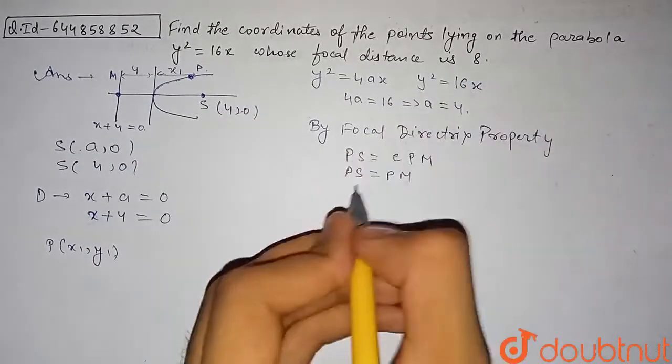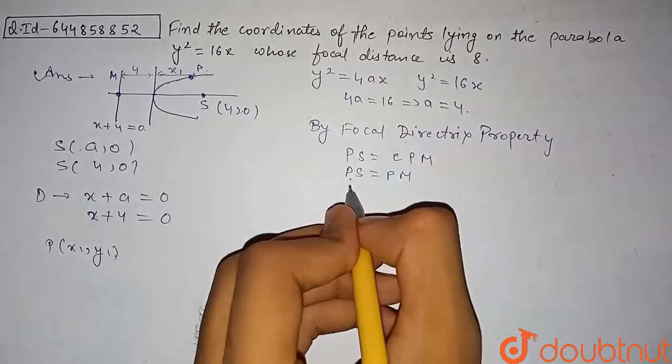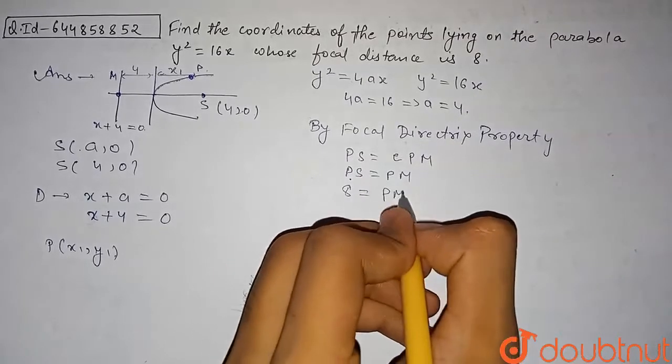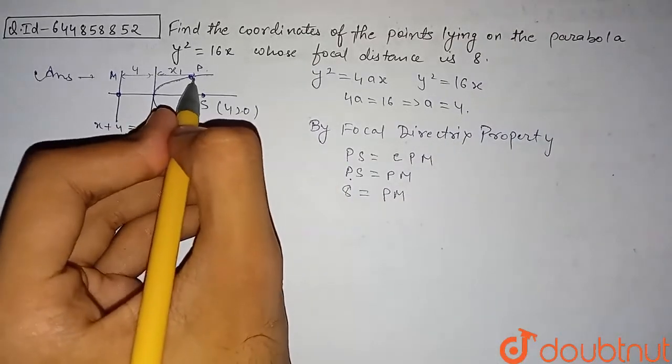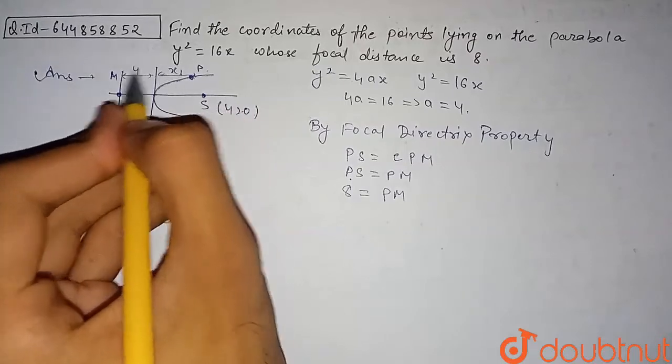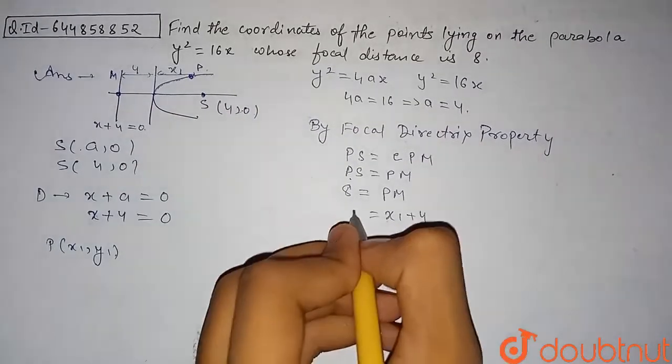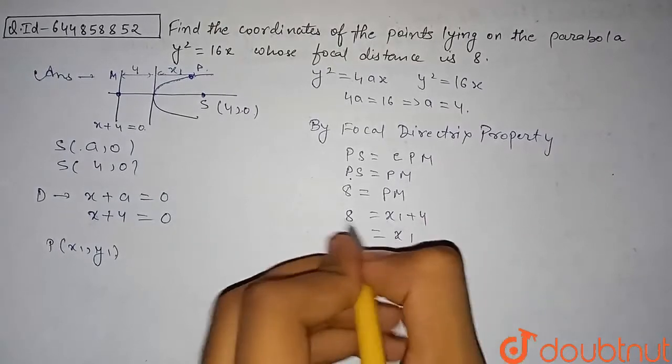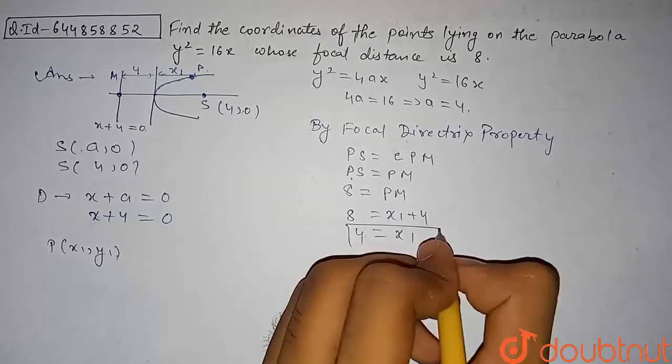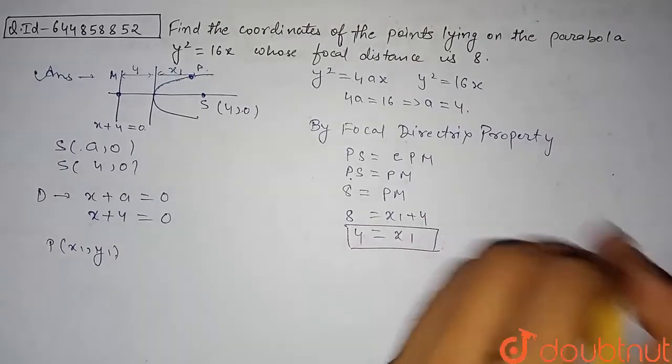The focal distance is given as 8. Substituting, we get 8 = PM. PM = x₁ + 4, so x₁ + 4 = 8. Therefore, x₁ = 8 - 4 = 4.